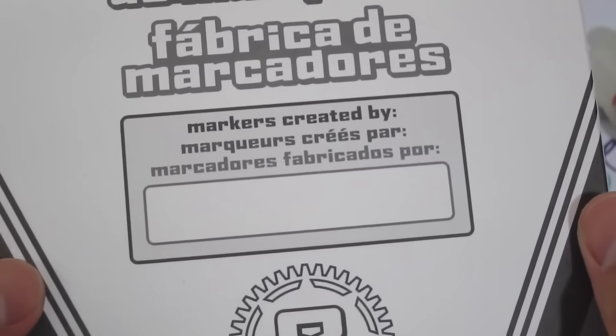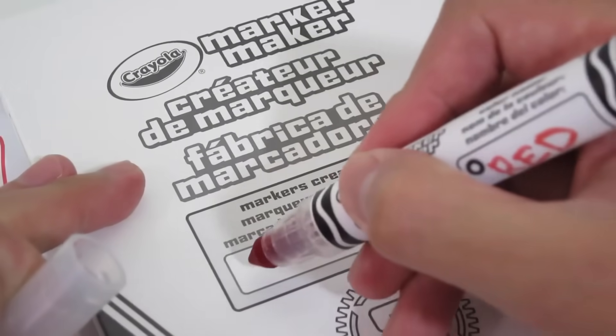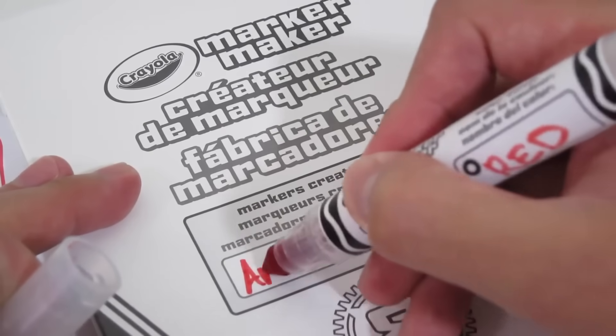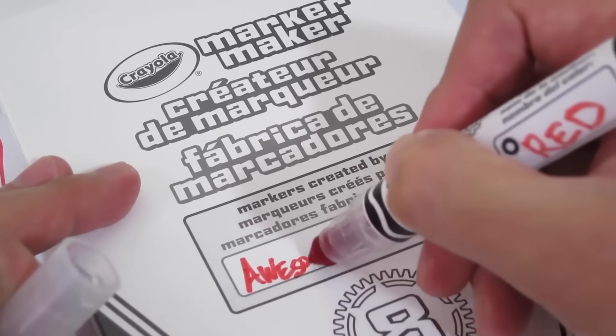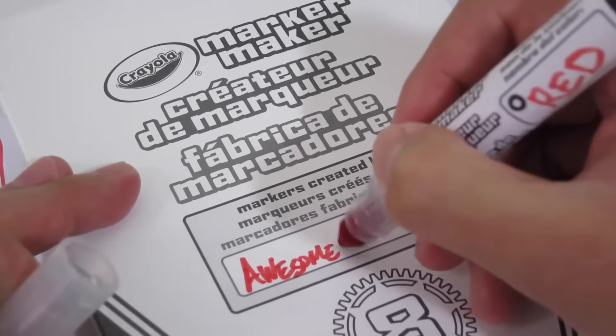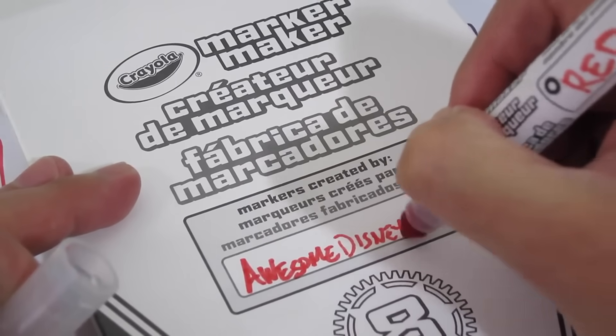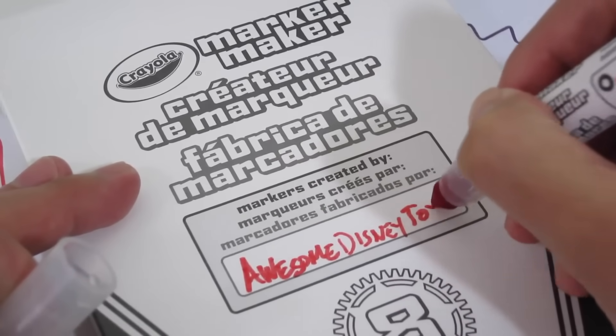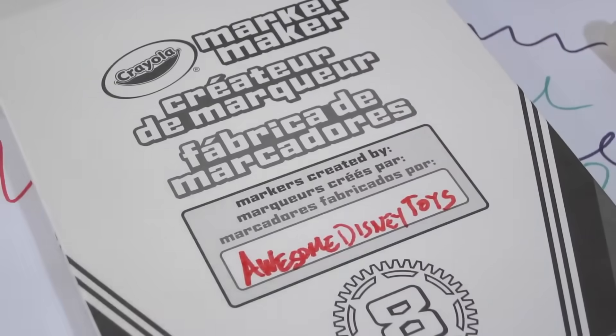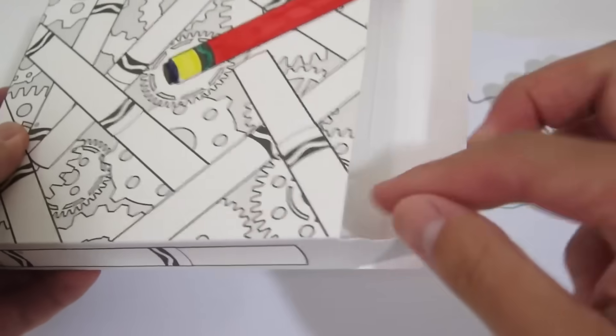And now we need a name for our marker box. We'll do Awesome Disney Toys. Let's place all of our markers in here.